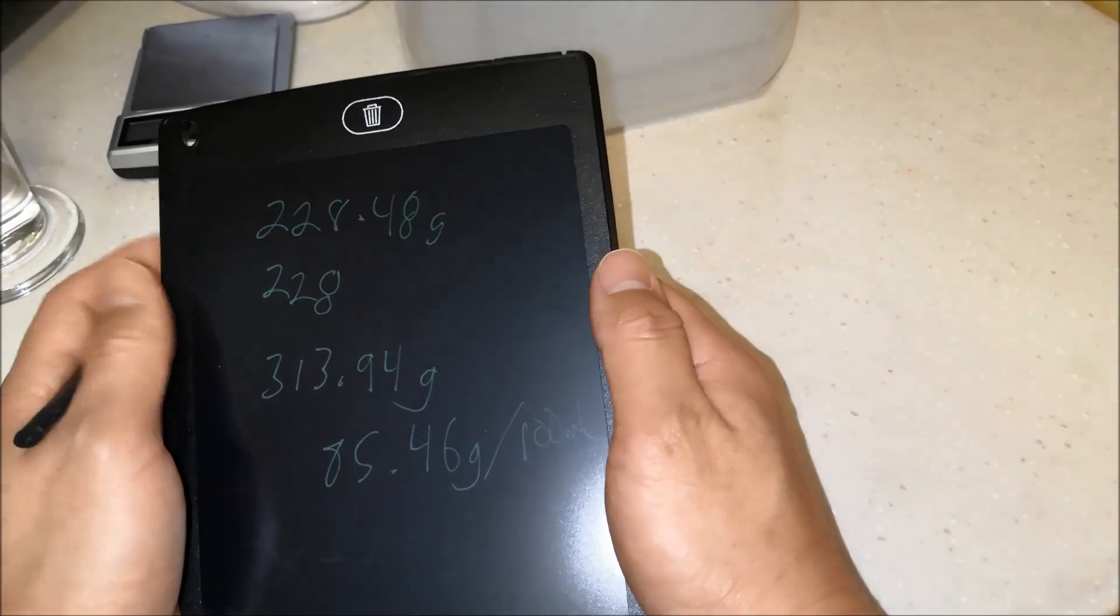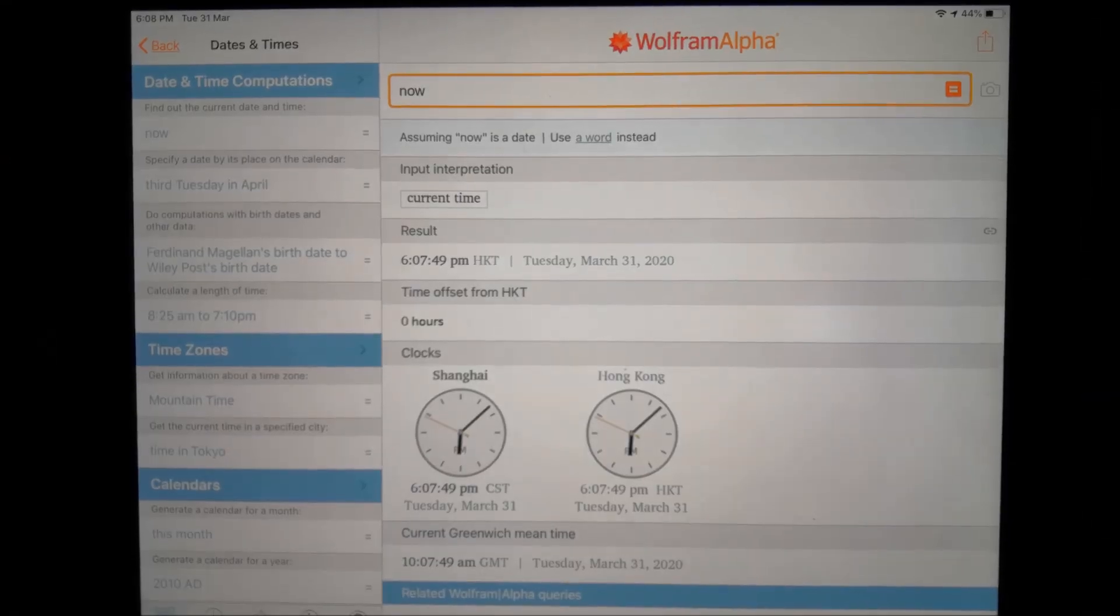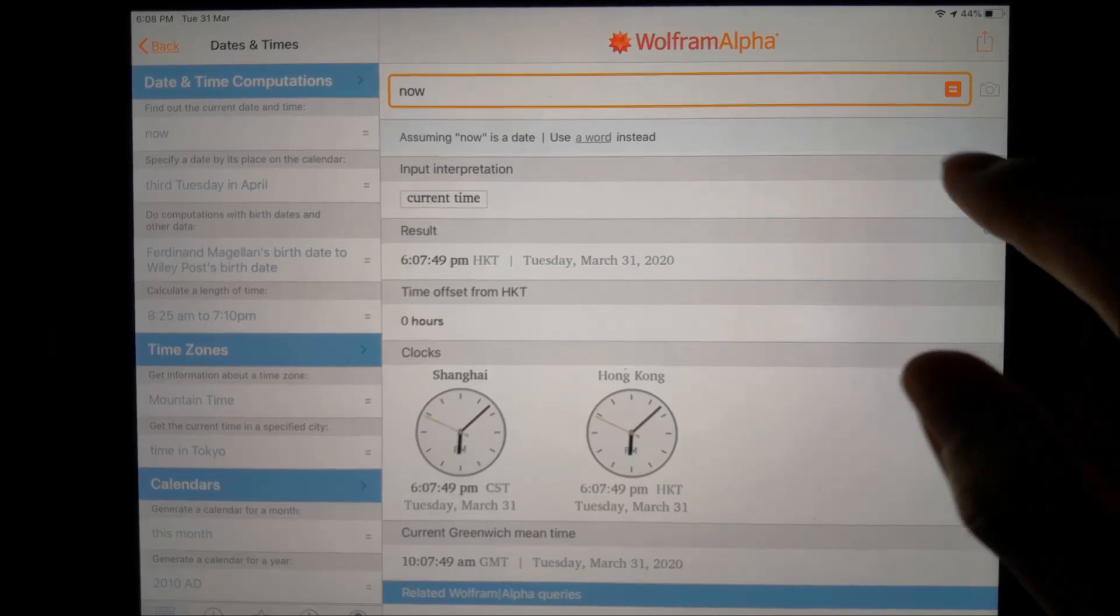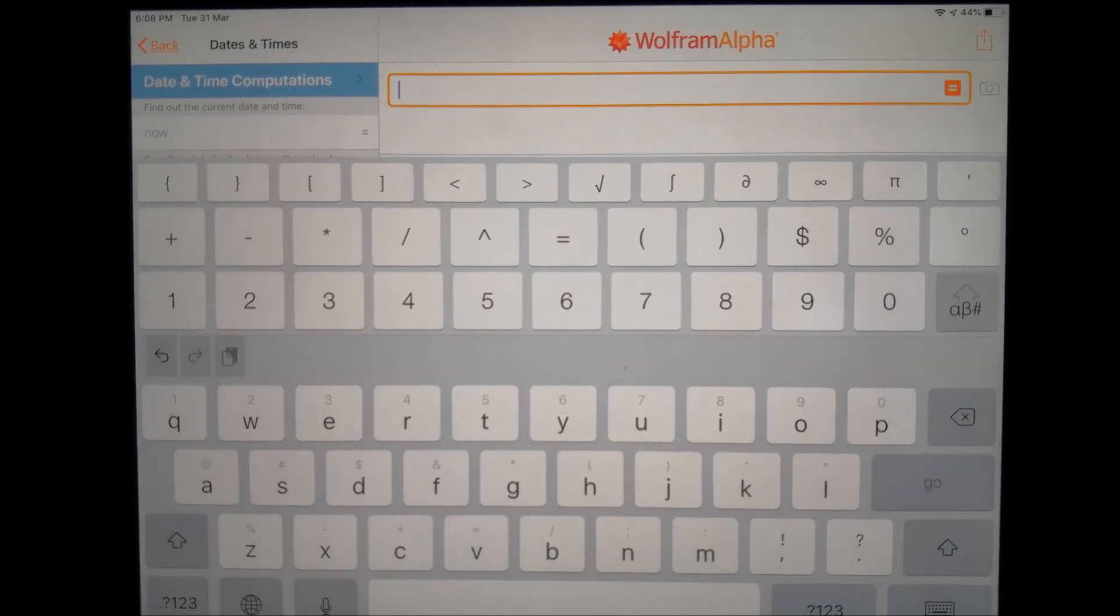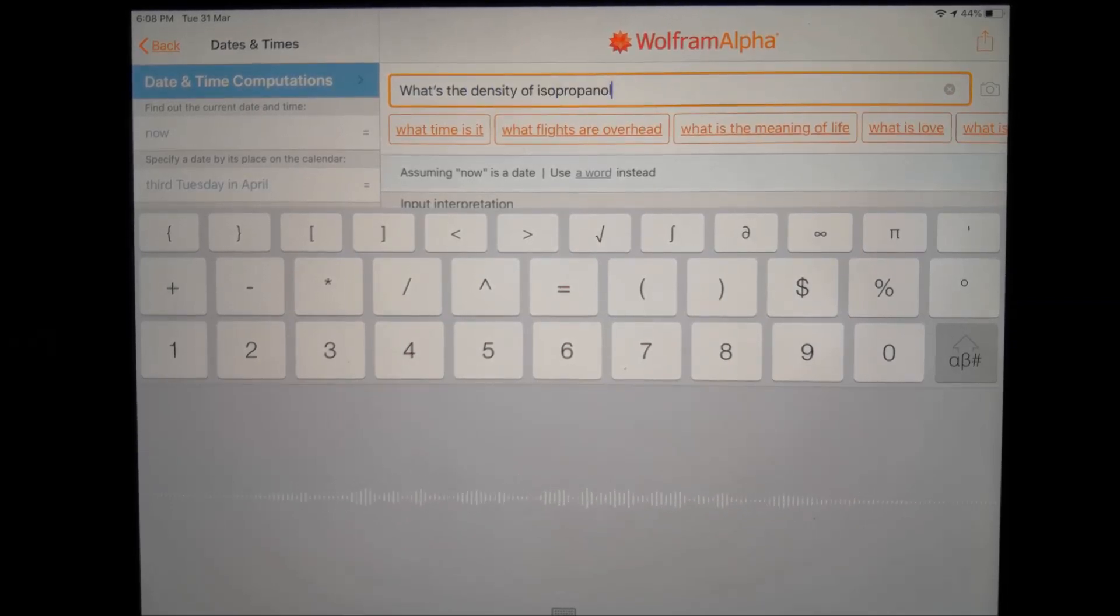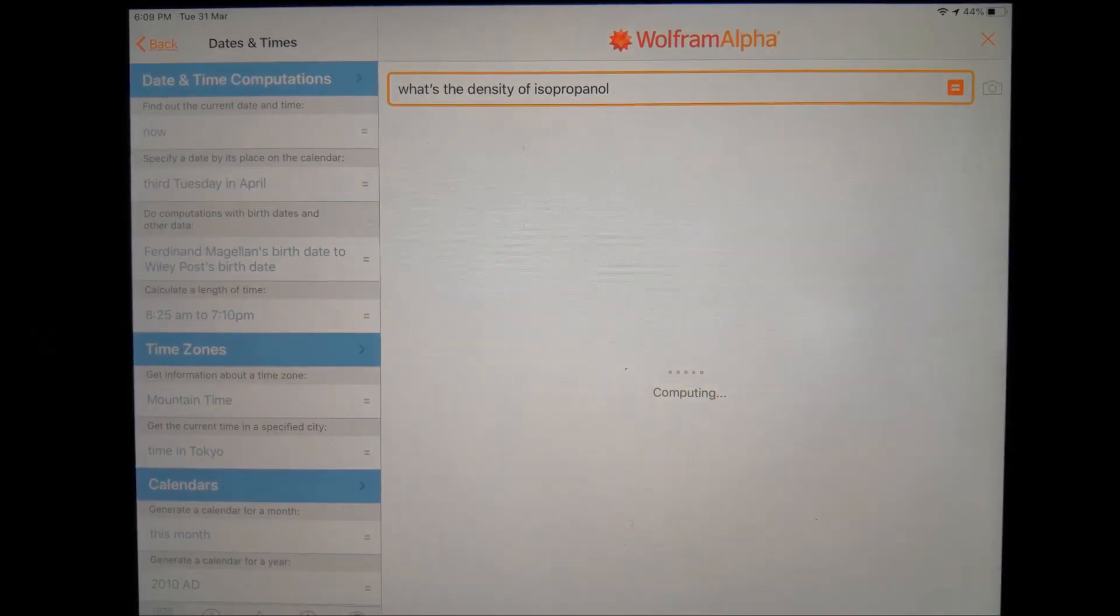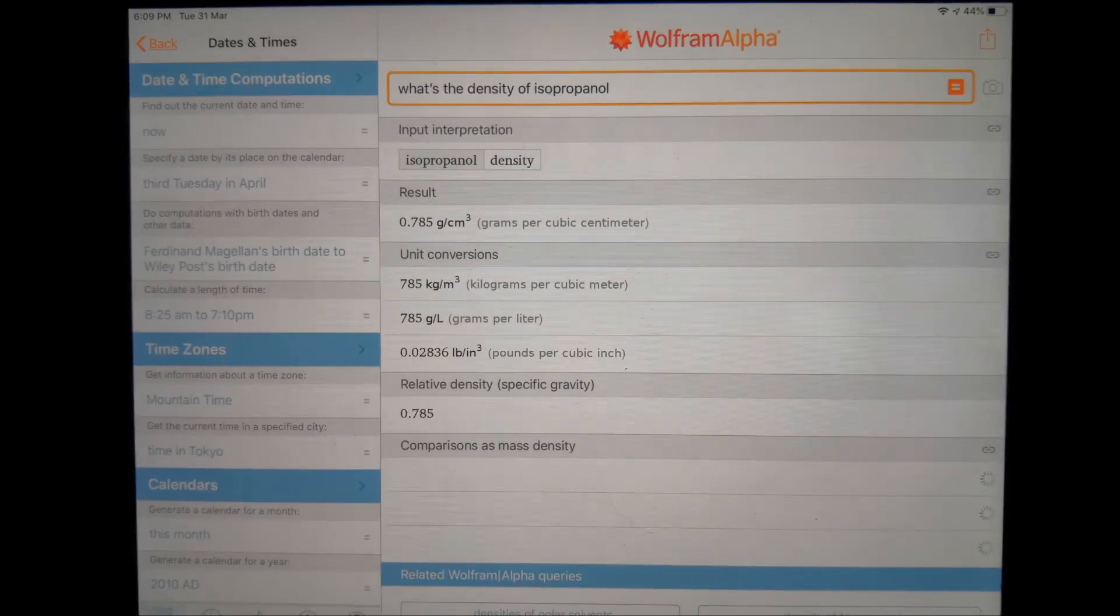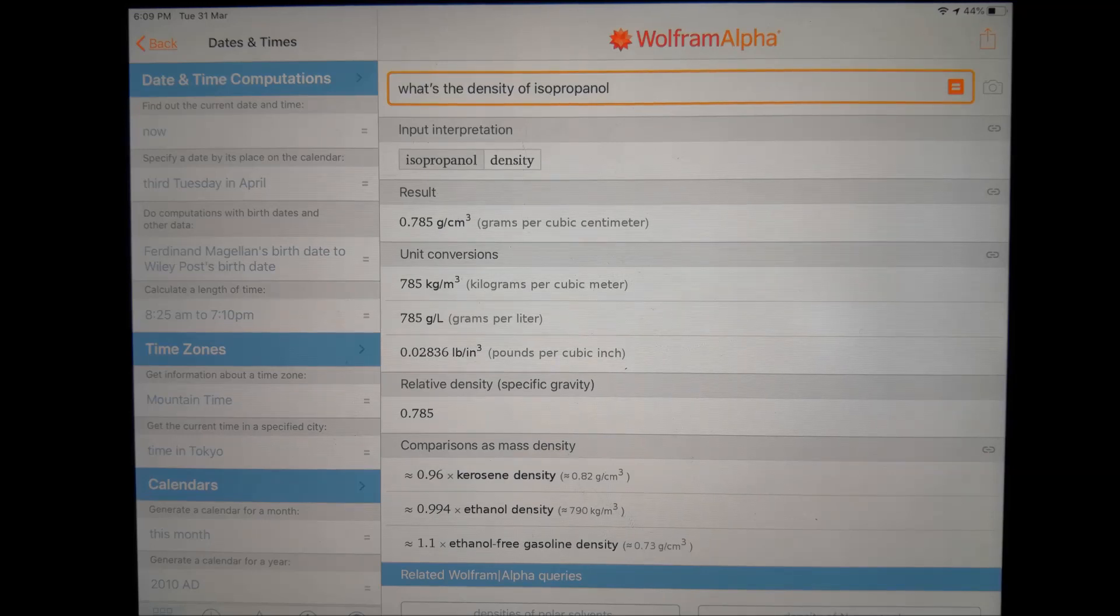And for us to do the calculation, well, we need to know what the density of isopropyl alcohol is. Okay. So now we're going to do some math here to figure out what our alcohol percentage is. We're going to use Wolfram Alpha to help us out. What's the density of isopropyl alcohol? Okay. So I'll write this down. 0.785 grams per cubic centimeter.